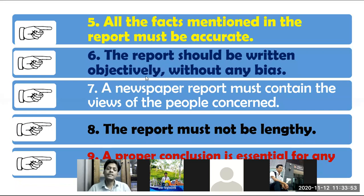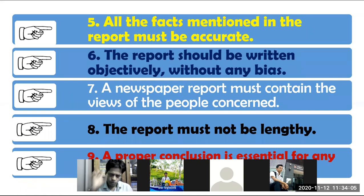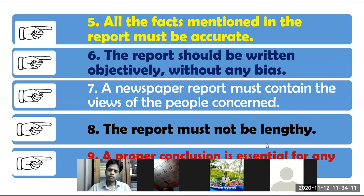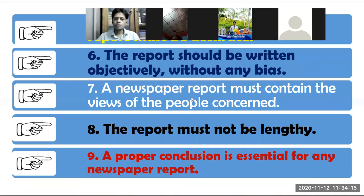The report should be written objectively. What does 'objectively' mean? You cannot put your own decision, you cannot put your own opinion. You must not show any bias. Number seven: a newspaper report must contain the views of the people concerned. If you have written a report on a road accident, you must include views from the relevant people involved.